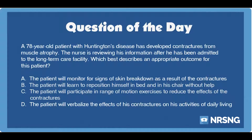The answer is C. The patient will participate in range-of-motion exercises to reduce the effects of the contractures. Huntington's disease is a progressive condition that can lead to muscle atrophy and potential contractures. The patient should be given a program of range-of-motion exercises in which he may need assistance. The nurse can help the patient increase his range of motion and prevent worsening of the contractures by improving flexibility and reducing rigidity.